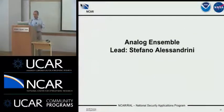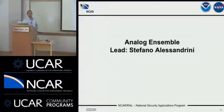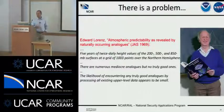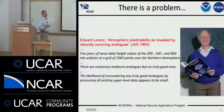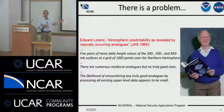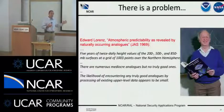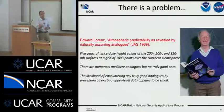Now let me talk about the second task led by Stefano — the analog ensemble, which we use for uncertainty quantification. The basic idea is that if I look at today's forecast and I find past forecasts that look very similar to the current prediction, those past forecasts are going to make a similar error to what the current forecast will make. The past forecasts have observations associated with them, so I know what kind of errors they made and I can make inference about what the error for today's prediction is going to be.